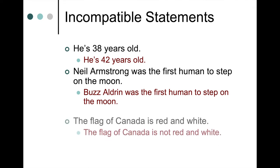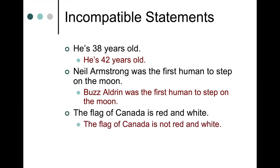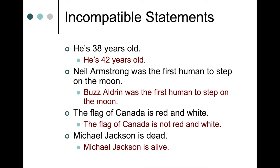Here's another example: The flag of Canada is red and white. The flag of Canada is not red and white. If the first statement is true, the second must be false, and vice versa — they cannot be true at the same time, so they are incompatible. And a final example: Michael Jackson is dead. Michael Jackson is alive. A person can't be dead and alive at the same time, so those statements are incompatible — whether we're talking about the famous singer or the communication lecturer.